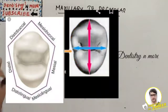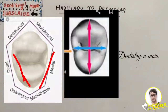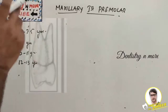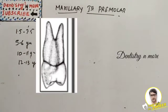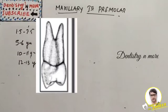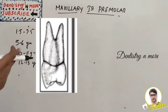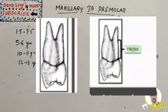Finally, the root: most maxillary first premolars have two roots, but one or three roots can also be seen, so caution is needed during extraction. The two roots are buccal and lingual. The buccal portion of the root resembles the canine. When viewed from the proximal side, there is a large trunk and a bifurcation area where buccal and lingual roots separate, and there is a developmental depression on the mesial aspect of the trunk.